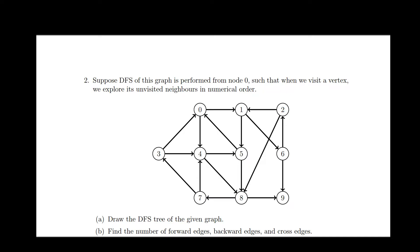Hello everyone, let us try to solve the second tutorial question related to graph theory. Suppose DFS of this graph is performed from node 0, such that when we visit a vertex, we explore its unvisited neighbors in numerical order.